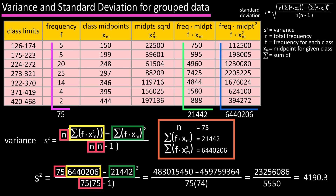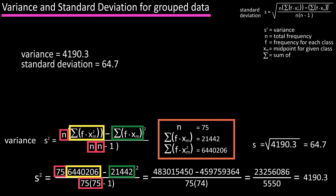To find s, the standard deviation, we take the square root of the variance: √4,190.3 ≈ 64.7. We now have both the variance and standard deviation for the grouped data. Hopefully this video helped — I have more videos available, and until next time!